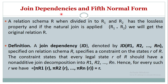The next topic is joint dependency. Fifth normal form is based on joint dependency. A relation schema R, when divided into R1 and R2, has the lossless property if applying the natural join gives back the original relation. If we decompose R into R1 and R2 and then naturally join them to get the original relation R, these decompositions are lossless.